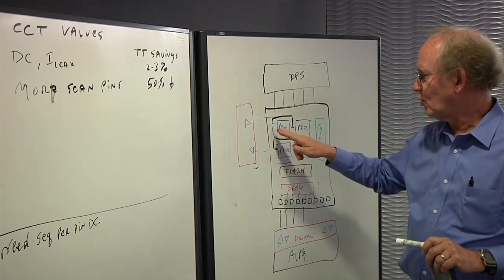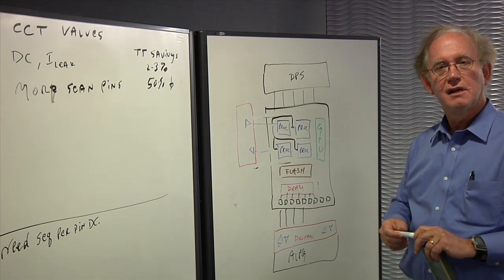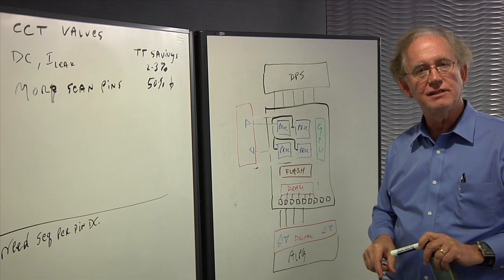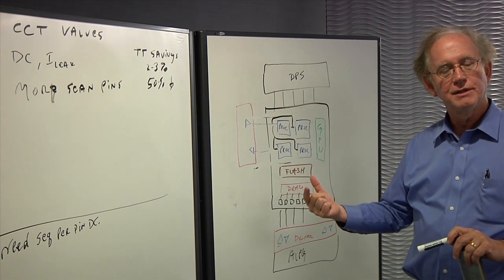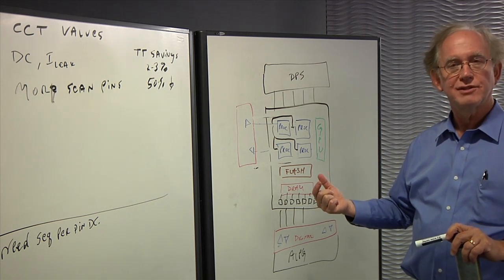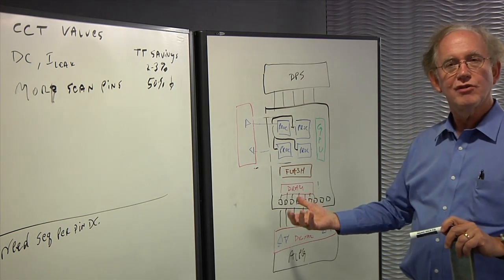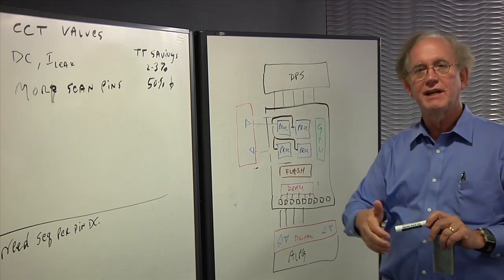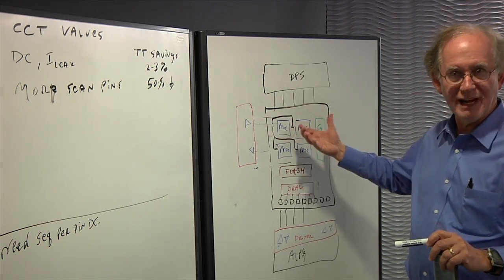Two benefits. One, you now have one pin driving all four tests. And two, the length of the scan chains all of a sudden became quite a bit less. That means less data volume, that means faster pattern loads, that means faster test time. So the actual benefit here is more than simply 70% of my test time times 75% reduction. It's actually more than that because the tests are actually shorter.